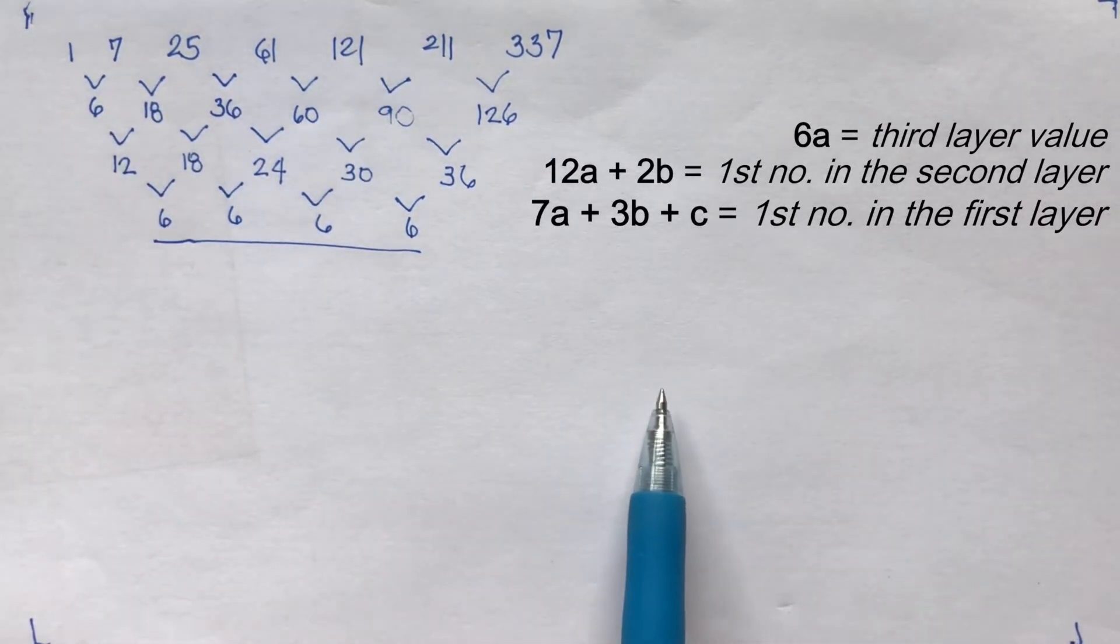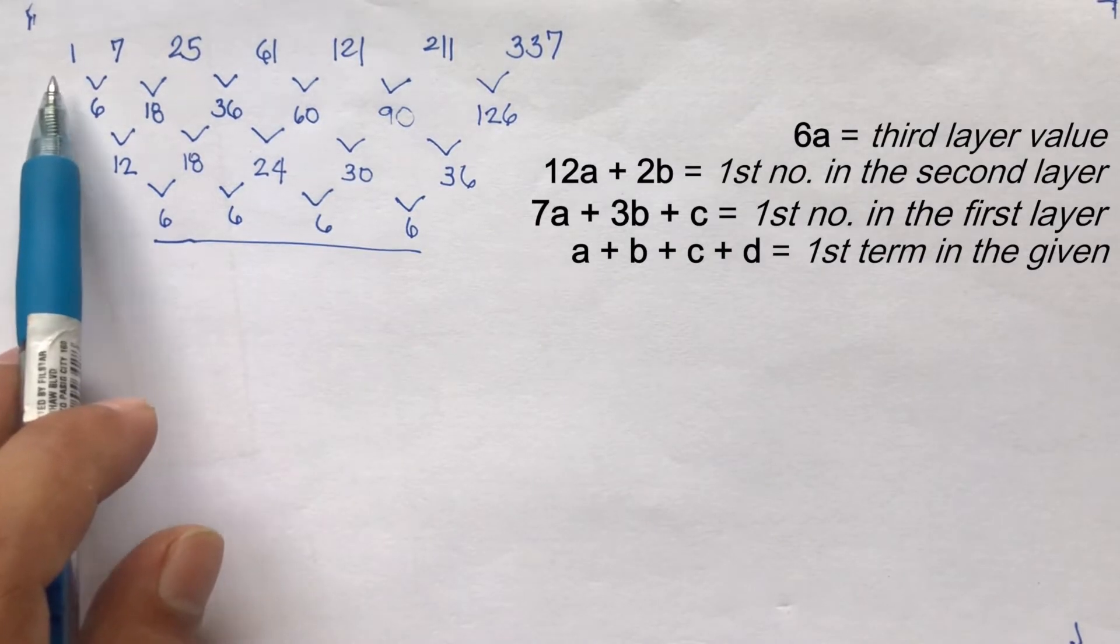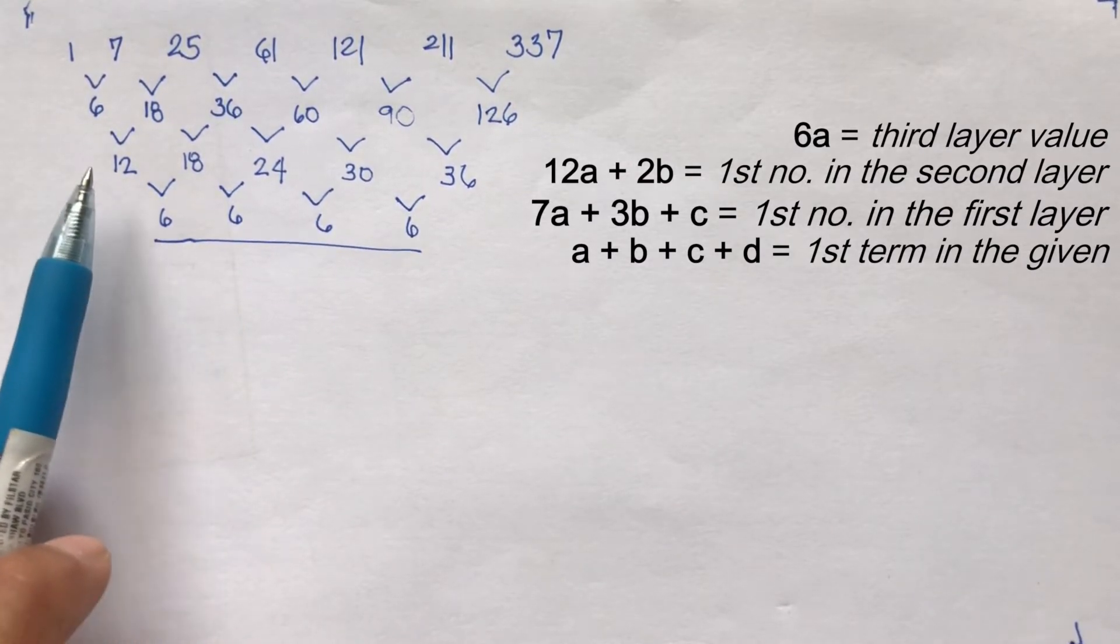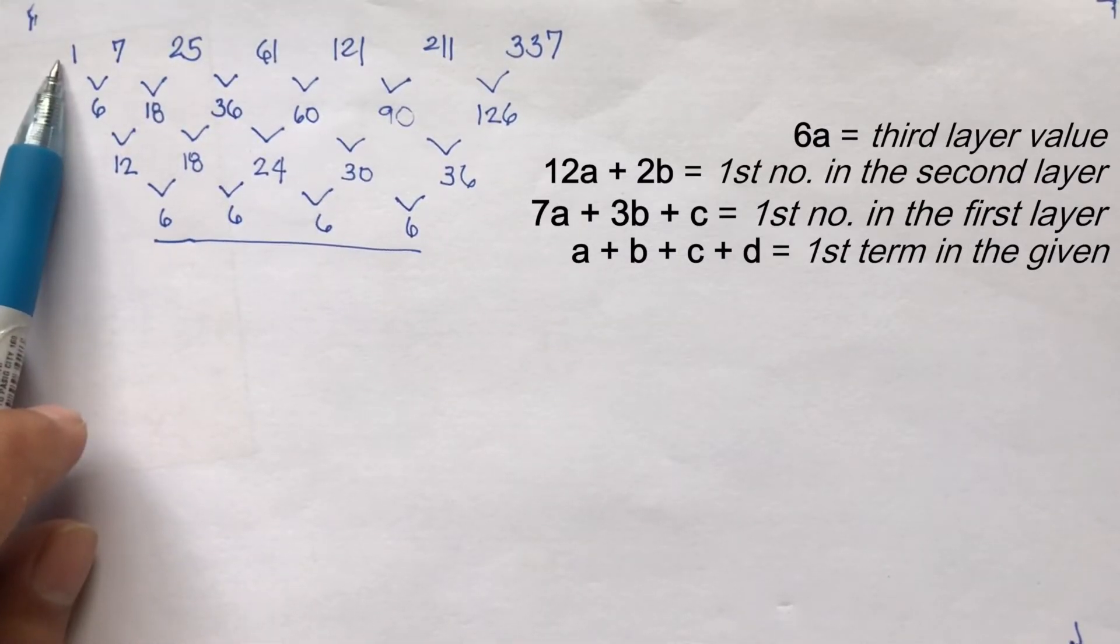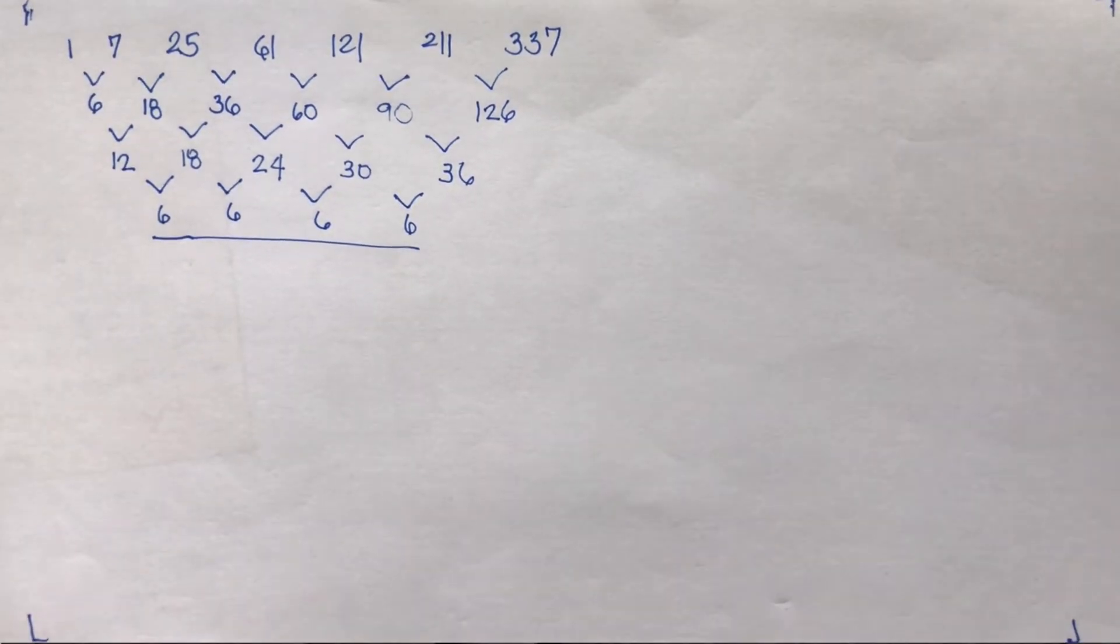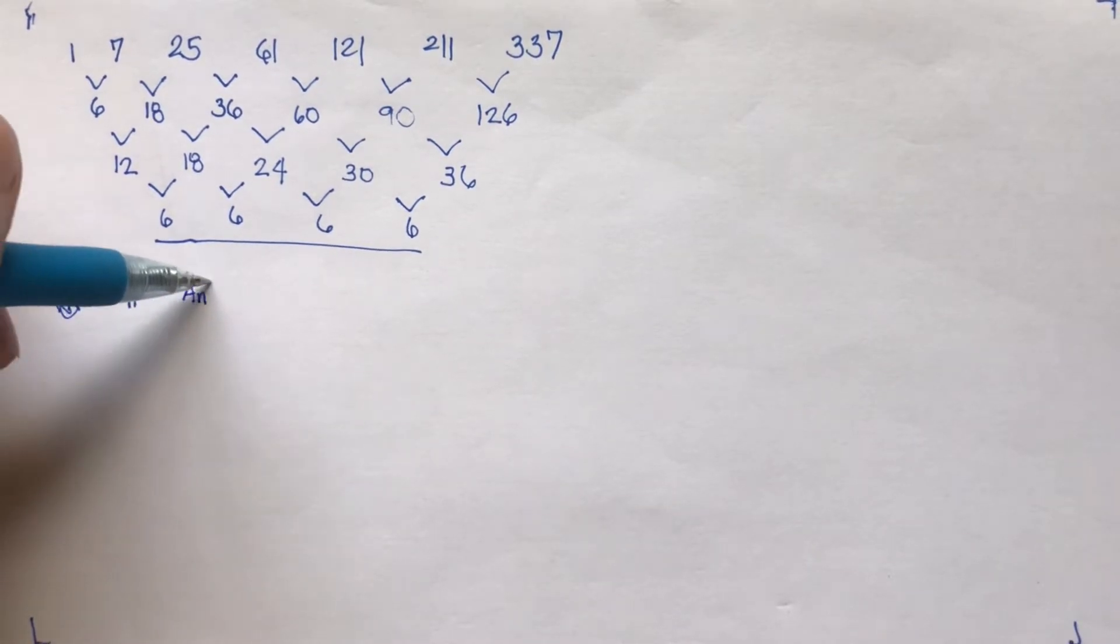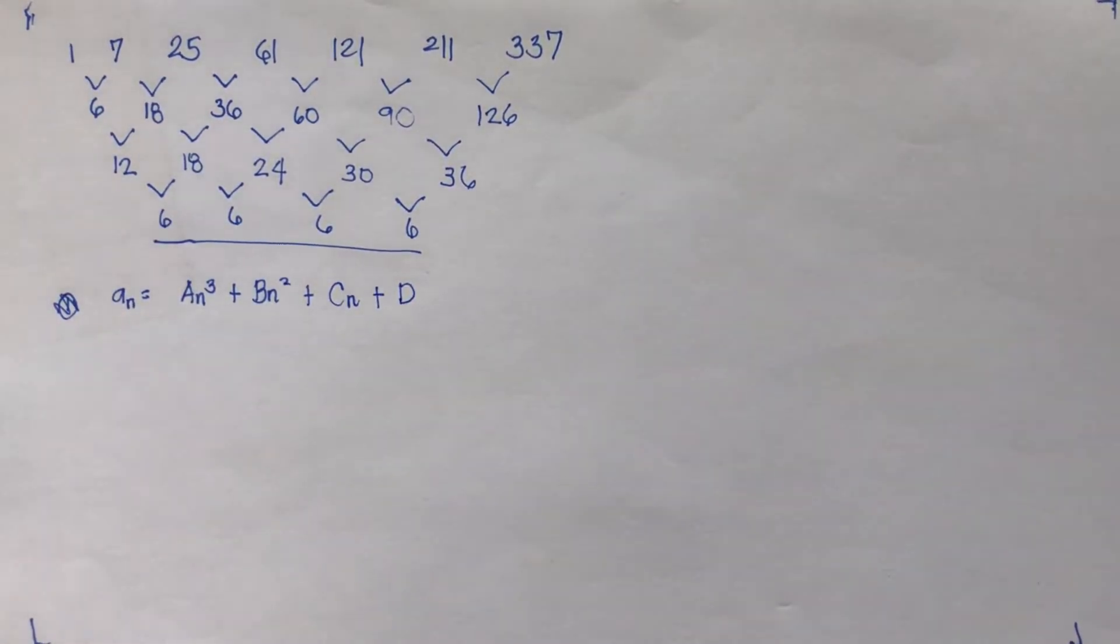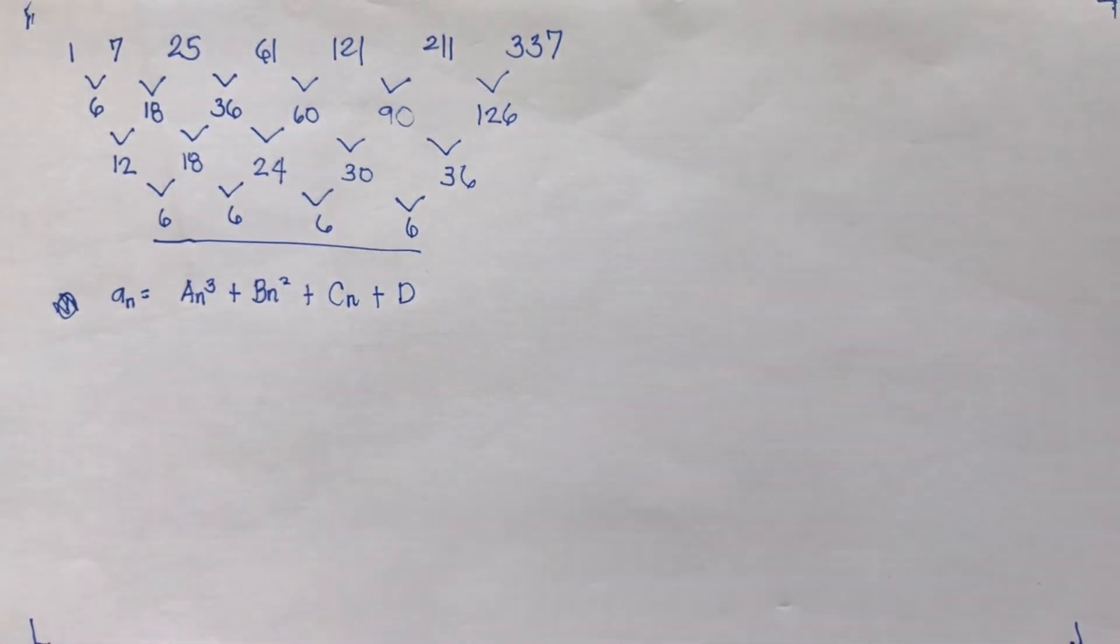And then the fourth formula is a plus b plus c plus d is equal to the first term. So the pattern is just the same. The first formula equals 6, the second formula equals 12, the third formula equals 6, and the last formula equals 1. So let's start coming up with the general term. The reference again for cubic is a sub n is equal to an³ plus bn² plus cn plus d, which means you're going to find all a, b, c, and d values using the four formulas.